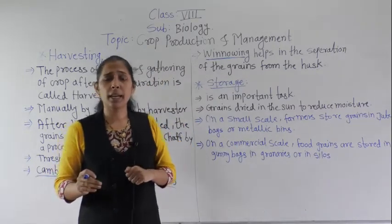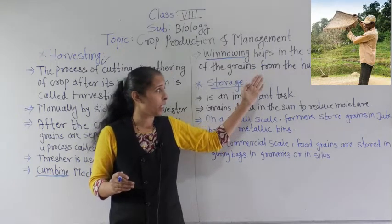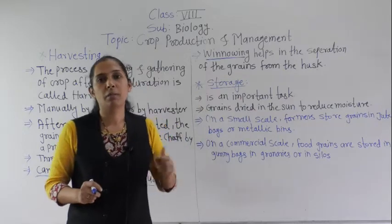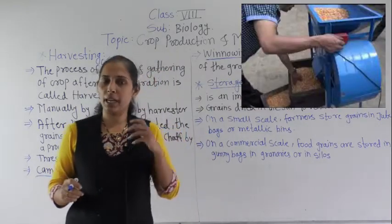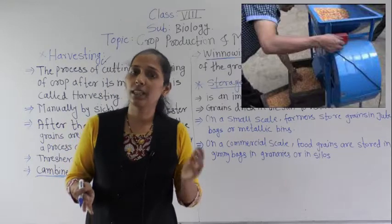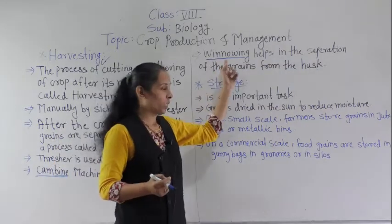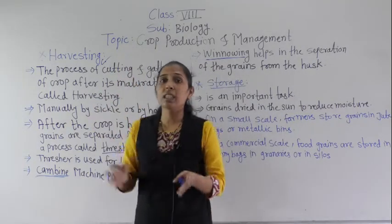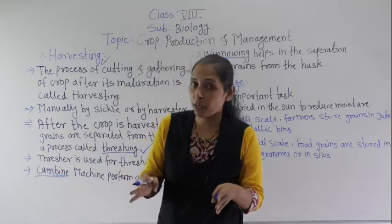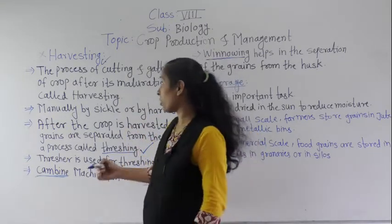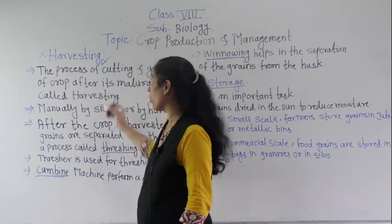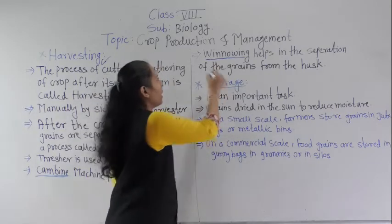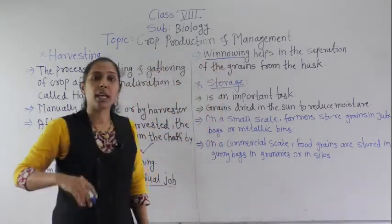Winnowing can be done manually, as shown in the image, and it can also be done using a winnowing machine on a large scale. So harvesting is not a single method — it is a series of agriculture practices. After harvesting, farmers must perform threshing and then winnowing.